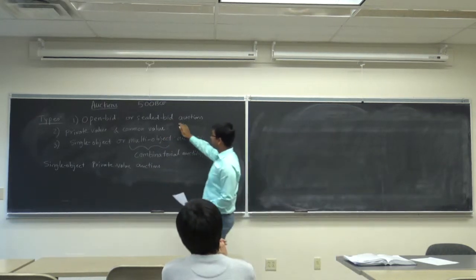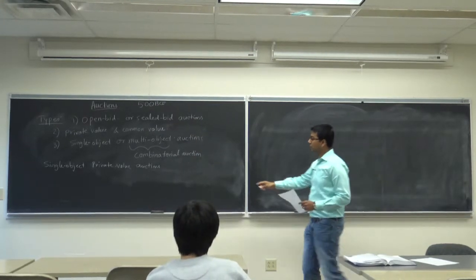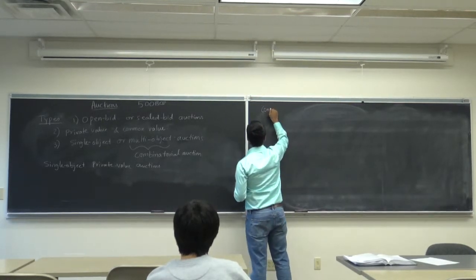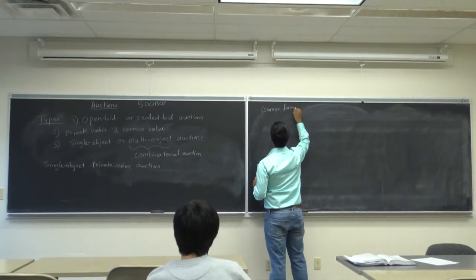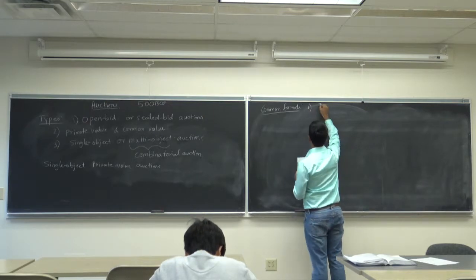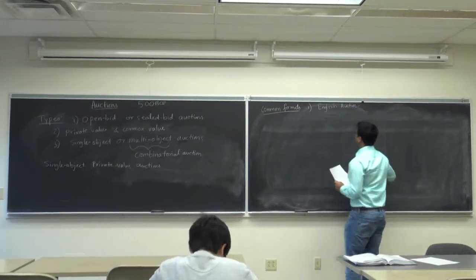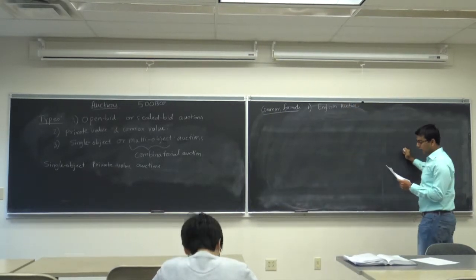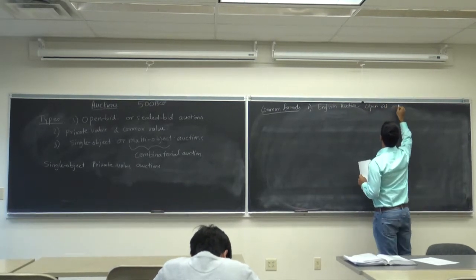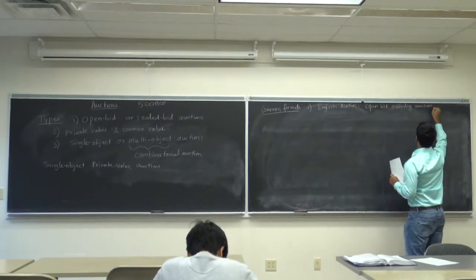We will talk both about open bid as well as sealed bid auctions. What are the different auction formats for this class? The most common formats — the first one is English auction. As the name suggests, this kind of auction was practiced in England. It is an open bid ascending auction.